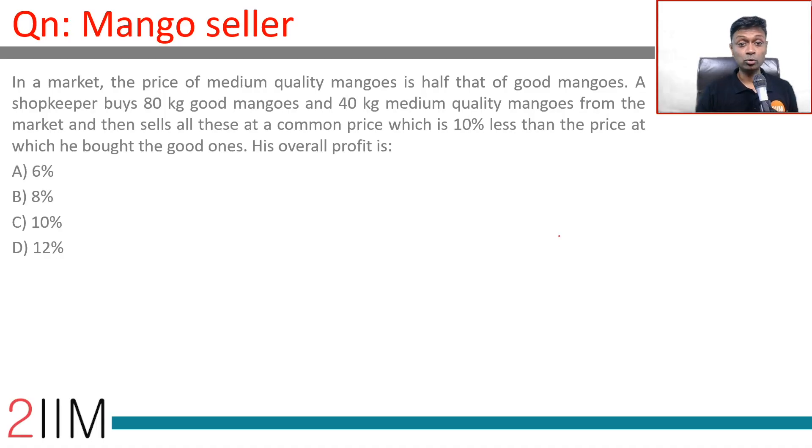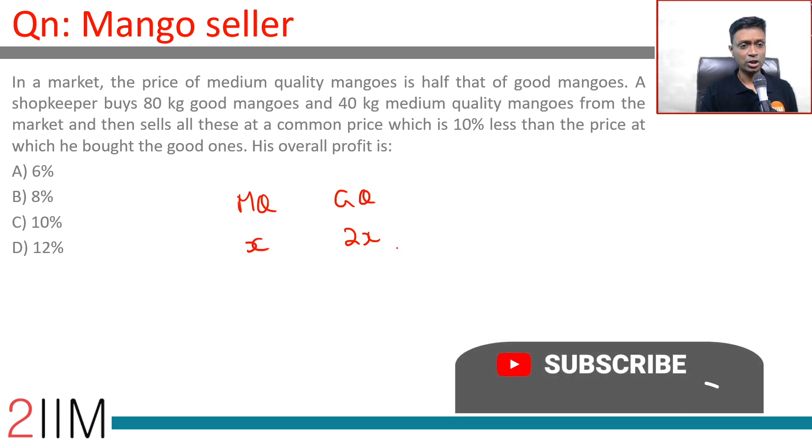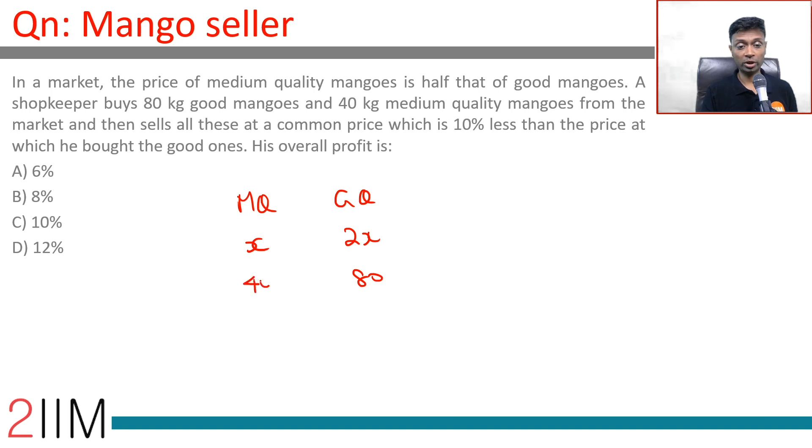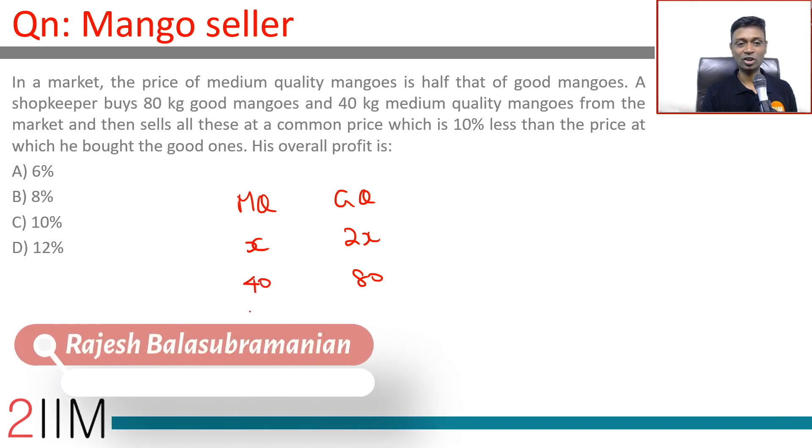In a market, the price of medium quality mangoes is half that of good mangoes. A shopkeeper buys 80 kilograms of good quality and 40 kilograms of medium quality mangoes, then sells all at a common price which is 10% less than the price at which he bought the good ones.